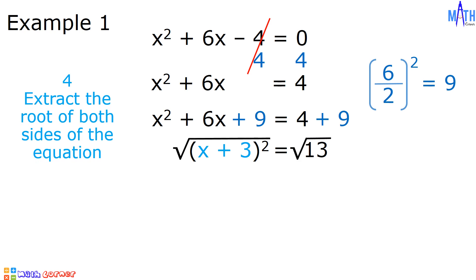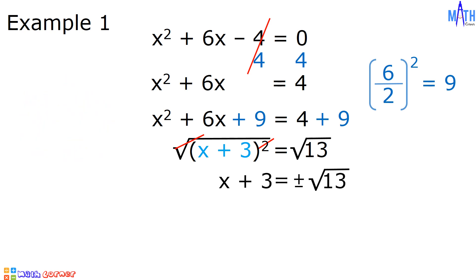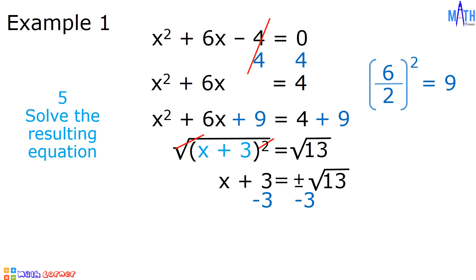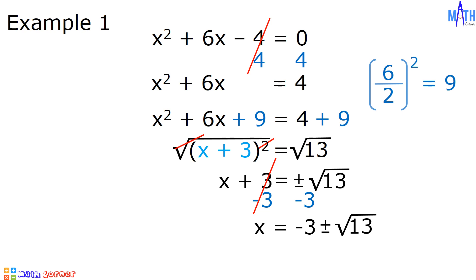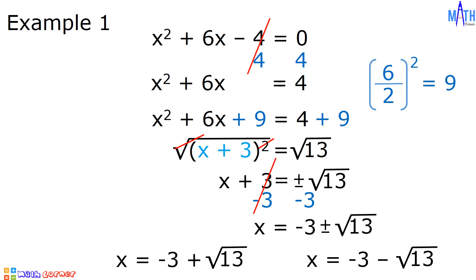Step number 4: let us extract the root of both sides of the equation. The square root of the square of x plus 3 is equal to x plus 3. The square root of 13 is equal to positive or negative square root of 13, by the square root property. Step number 5: let us solve the resulting equation. To solve for x, we need to add negative 3 to both sides. We have x on the left side, and negative 3 plus or minus square root of 13 on the right side. There are two values of x: x₁ is equal to negative 3 plus square root of 13, and x₂ is equal to negative 3 minus square root of 13.